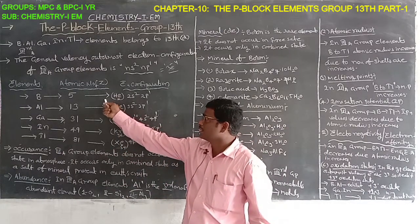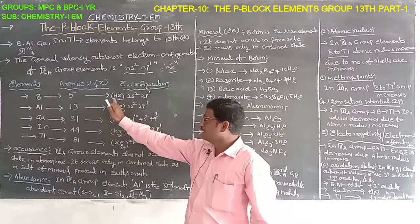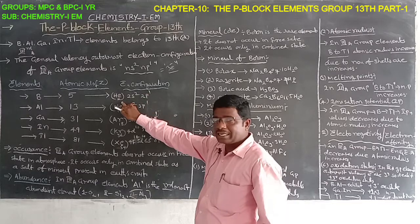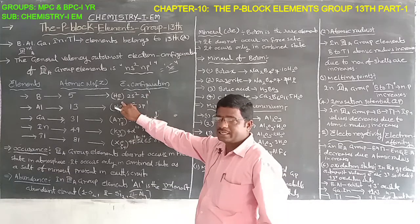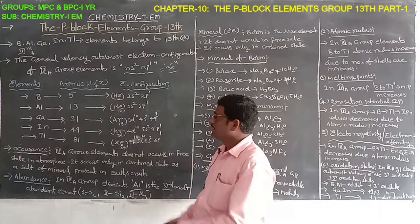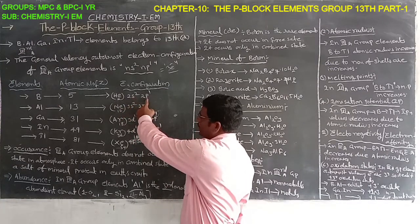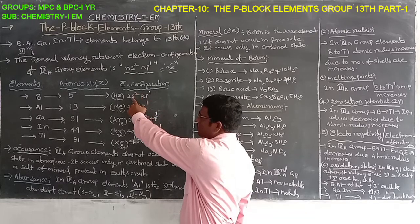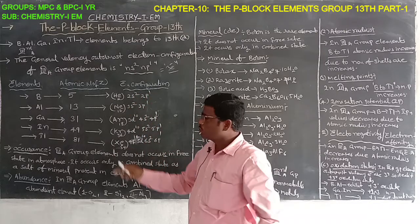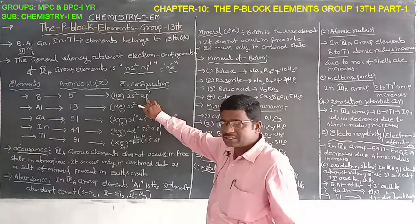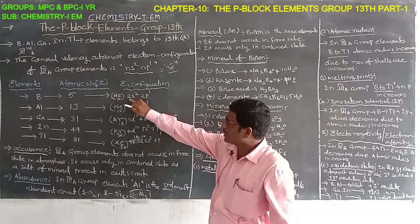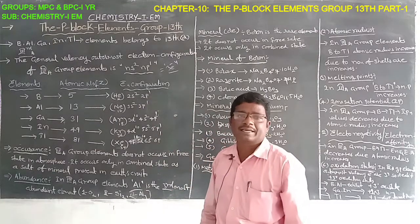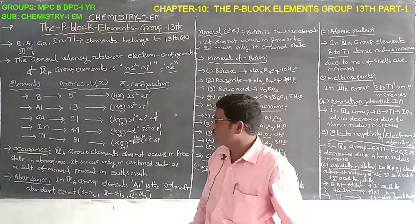Boron has atomic number 5. Its electron configuration is [He] 2S², 2P¹. The inert electron configuration is helium (atomic number 2), followed by 2S², 2P¹. The 2S² orbital has 2 electrons and the 2P orbital has 1 electron, so boron's outermost valence electrons are 3. Therefore it is a 3rd A group or 13th group element.